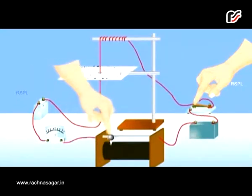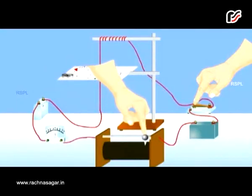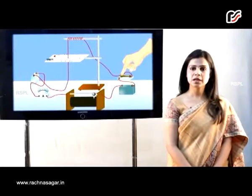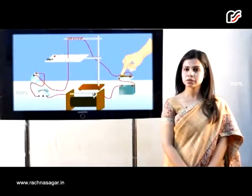When we vary the current in the wire, we observe that the deflection in the needle also changes. If we increase the value of the current, the deflection also increases. This indicates that the magnitude of the magnetic field produced at a given point increases as the current through the wire increases. When we move the compass away from the copper wire, keeping the current the same, we find that the deflection in the needle decreases. Thus, the magnetic field produced by a given current in the conductor decreases as the distance from it increases.